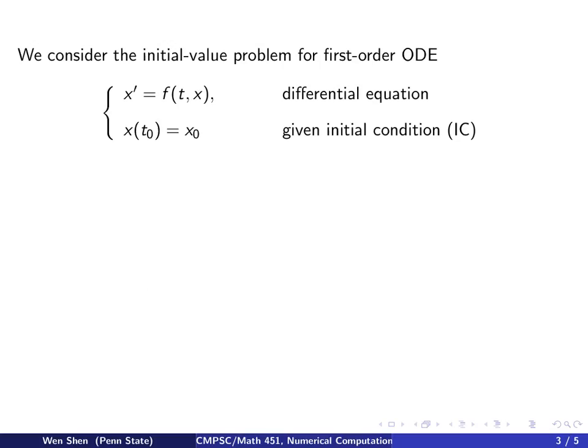We will be mainly considering the initial value problem for first order ODE in the following form. The derivative of your unknown is given as a function of time t and of your unknown. That is the differential equation. And there is an initial condition given at initial time t0, x is given as x0. This is called initial condition, and we will call it IC.